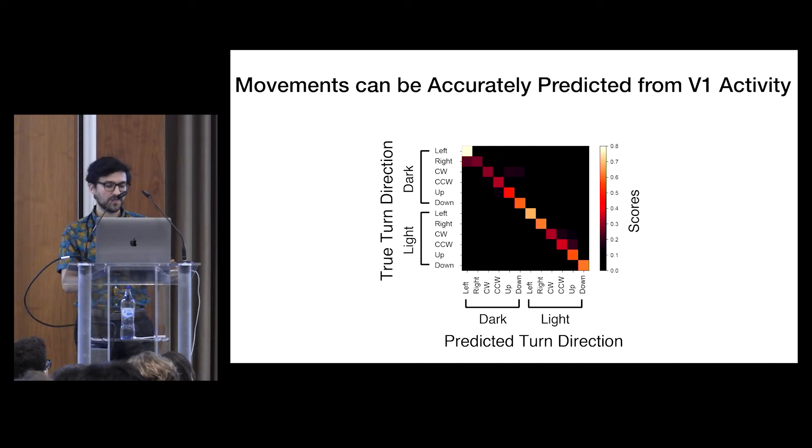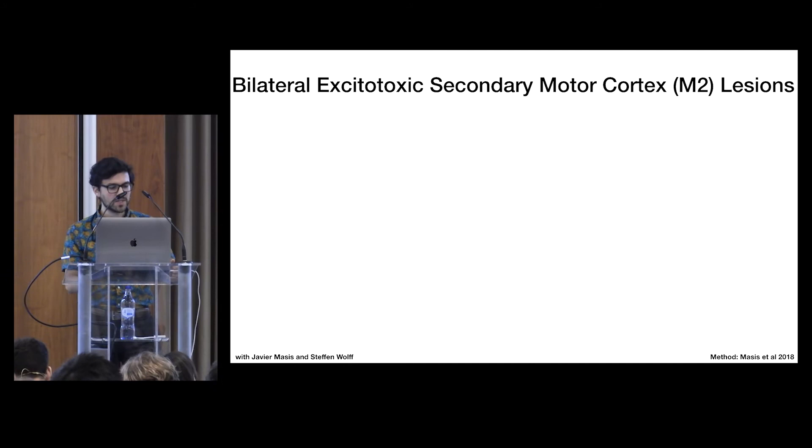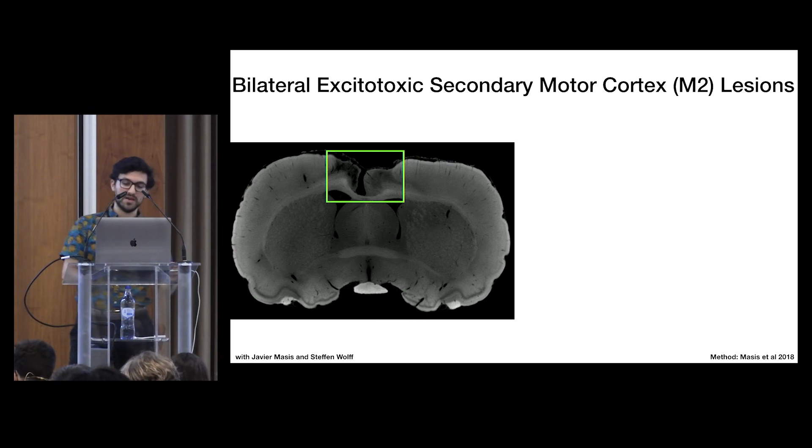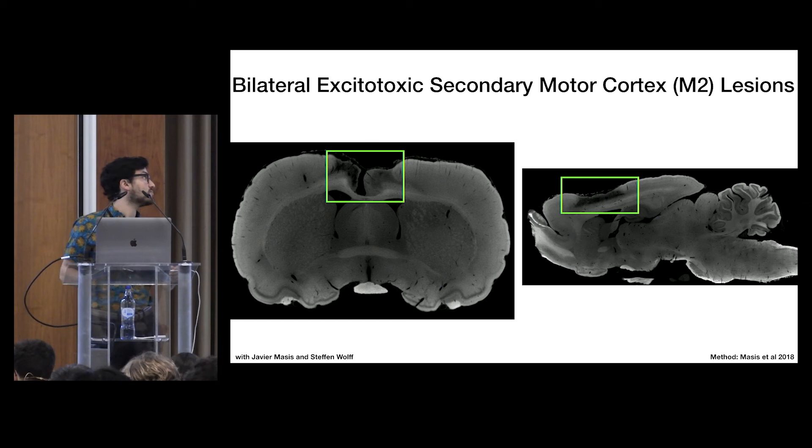So this led us to our next question, which is where does this information come from? Does it actually come from motor areas, perhaps like secondary motor cortex, which has previously been implicated in visual flow predictions? So we decided to lesion M2 excitotoxically using bilateral injections of ibotenic acid. This is work done with Javier Macis and Stefan Wolf. So here's a micro-CT scan of one of our lesion subjects. This is a digital coronal slice on the left and a digital sagittal slice on the right. The green box highlights, roughly speaking, the extent of the lesion.